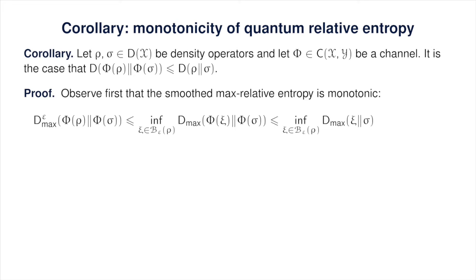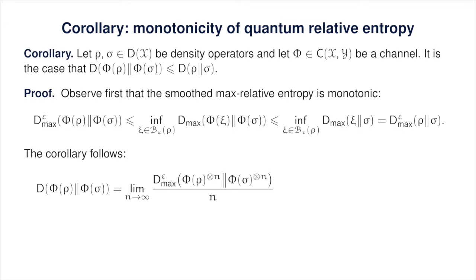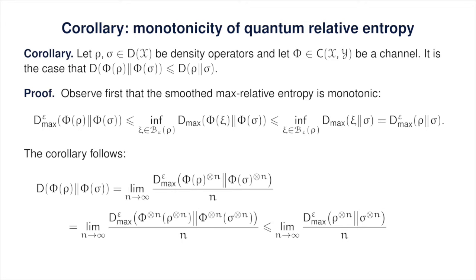The value we obtain is at most the infimum over all xi that are epsilon close to rho of the max relative entropy of xi with respect to sigma, by the monotonicity of the max relative entropy with respect to channels. That's precisely the smooth max relative entropy of rho with respect to sigma. By the theorem, the relative entropy of phi of rho with respect to phi of sigma is the regularized smooth max relative entropy of those two states. Applying the monotonicity of the smooth max relative entropy with respect to channels, this is upper bounded by the regularized smooth max relative entropy of rho with respect to sigma, which by the theorem is simply the relative entropy of rho with respect to sigma. That's the proof of the corollary.